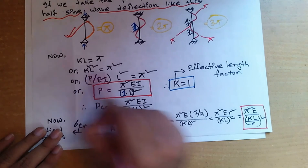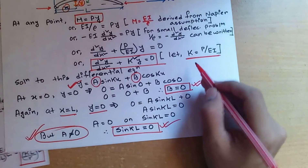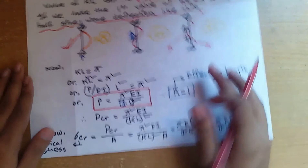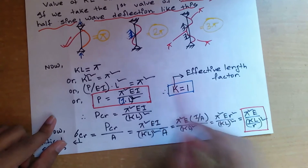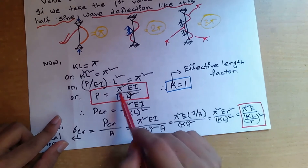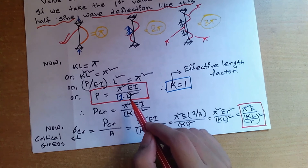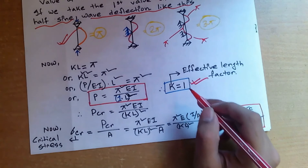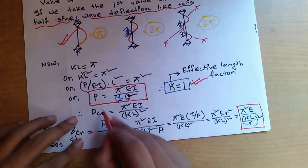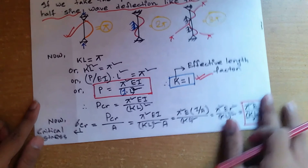Taking kL = π and squaring both sides: k²L² = π². Substituting k² = P/EI, we get (P/EI)·L² = π², which rearranges to P = π²EI/L². The coefficient of L is 1 here, and this is the effective length factor k. Therefore, the critical load is: P_cr = π²EI/(kL)².